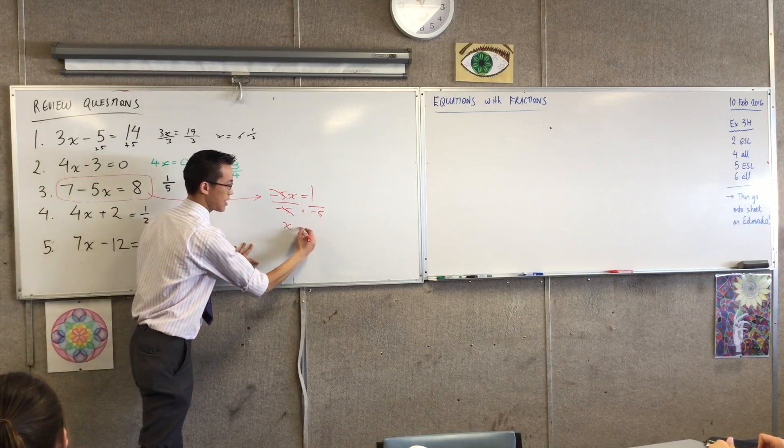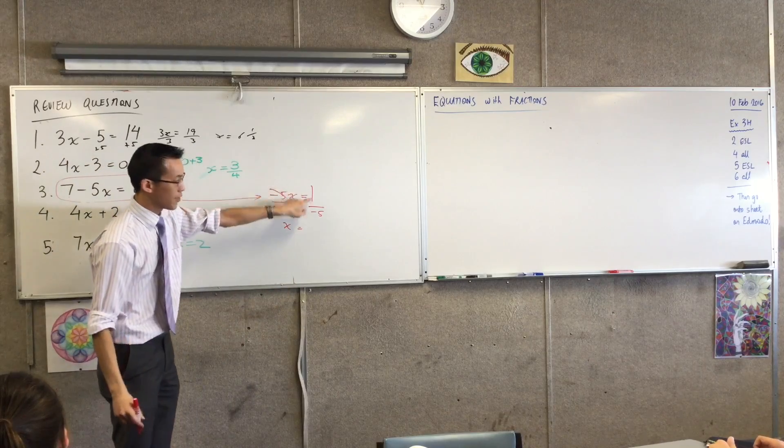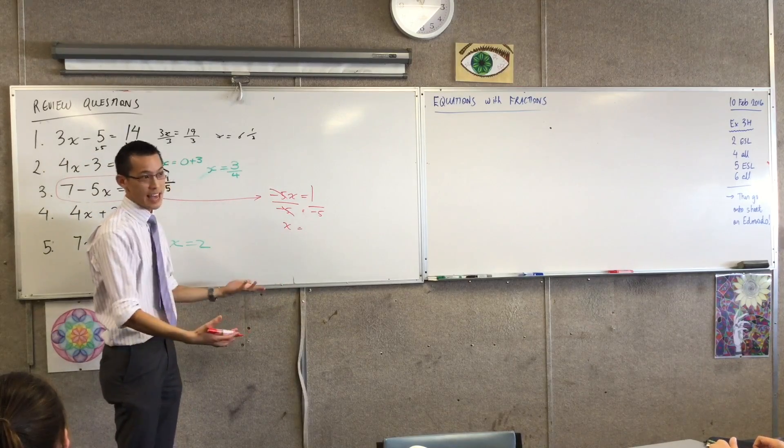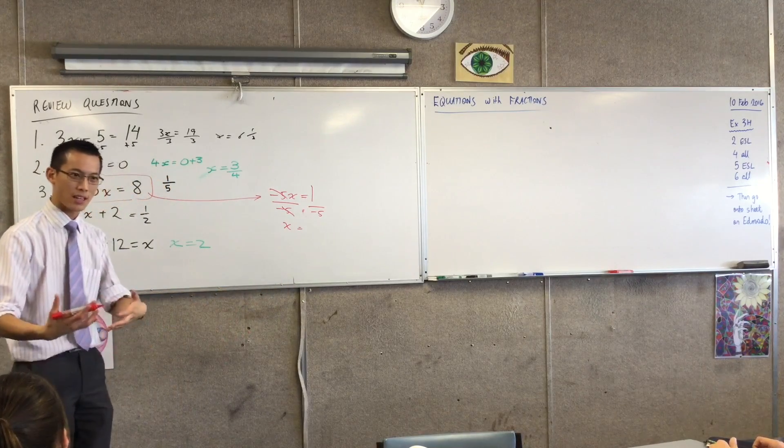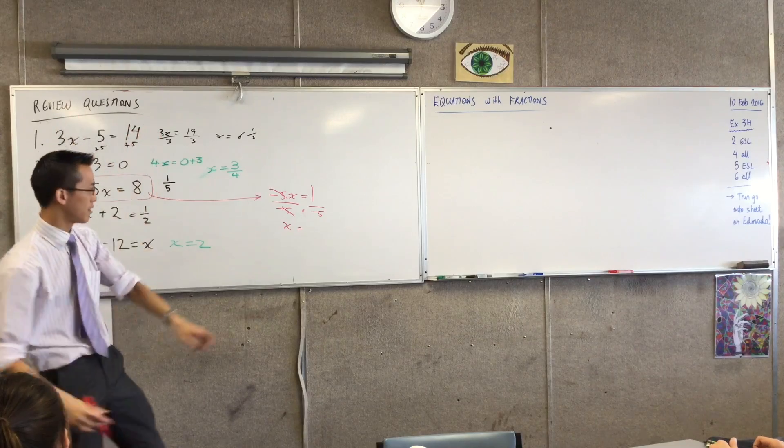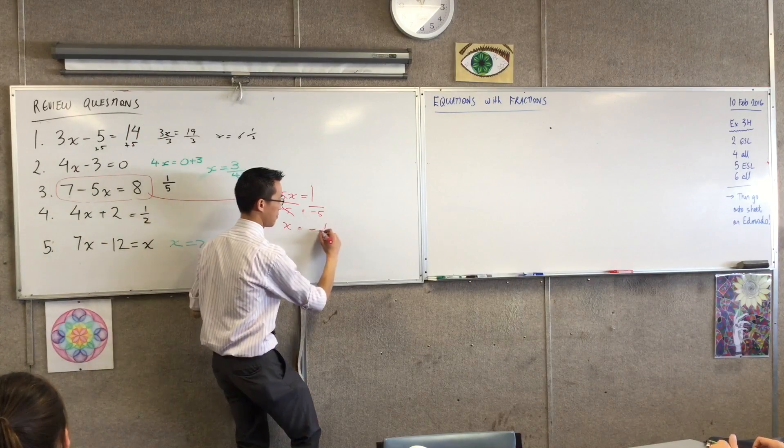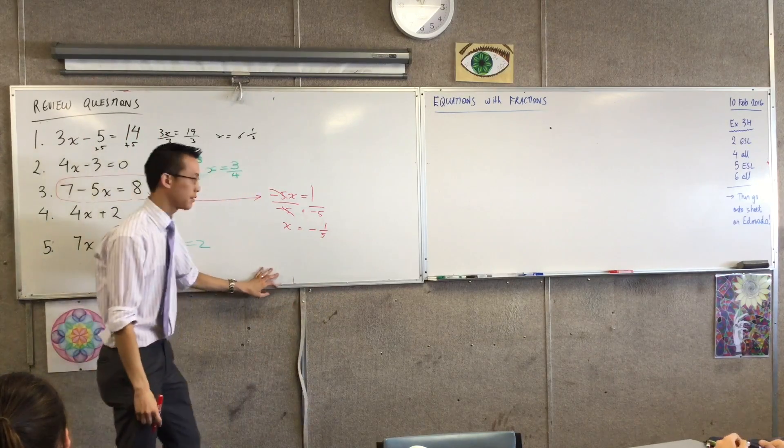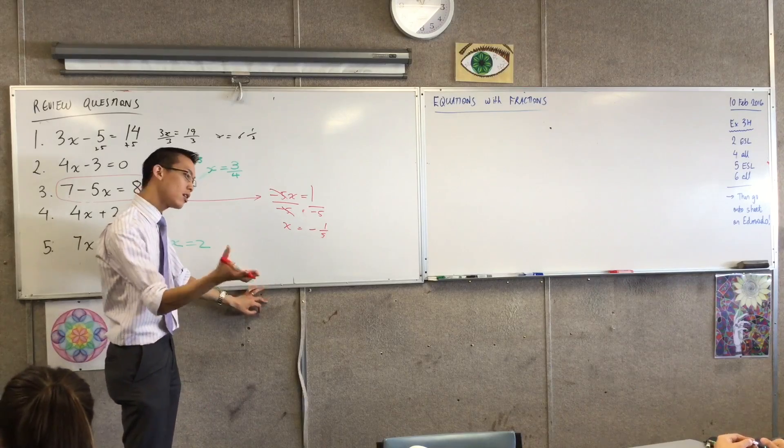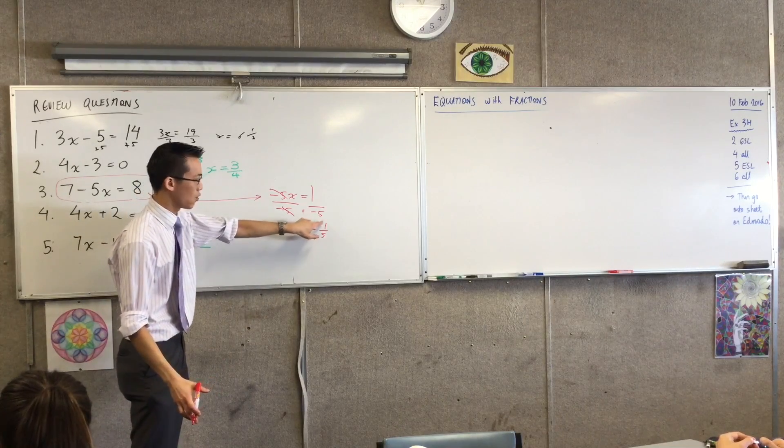Cancel, cancel, x equals - now 1 divided by minus 5, that is the answer, but we tend to put the negatives either on the top or kind of like in the middle, like that. It doesn't matter where it is. It does not really matter whether it's here or there.